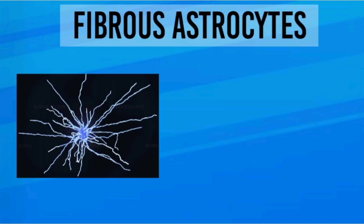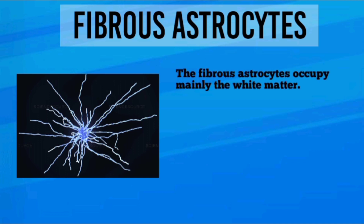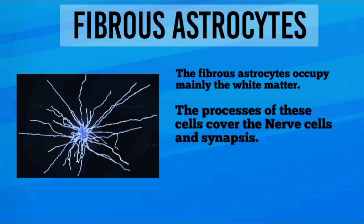Fibrous astrocytes occupy mainly the white matter. The processes of these cells cover the nerve cells and synapses, and this type of cell plays an important role in the formation of the blood-brain barrier.